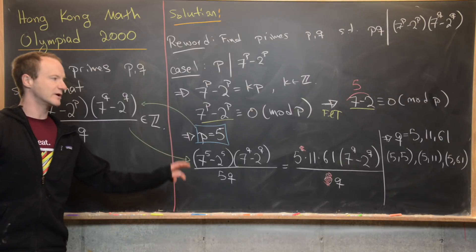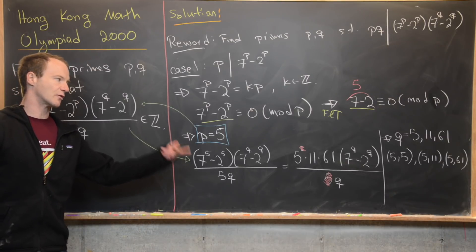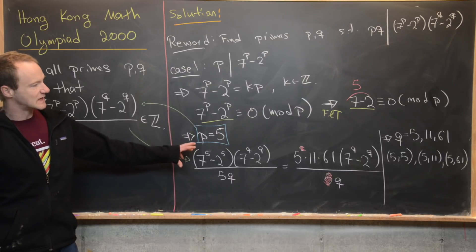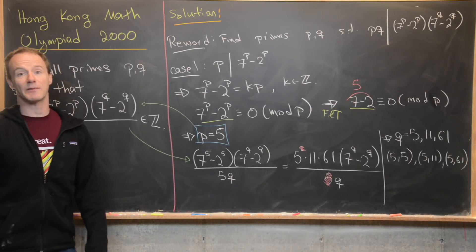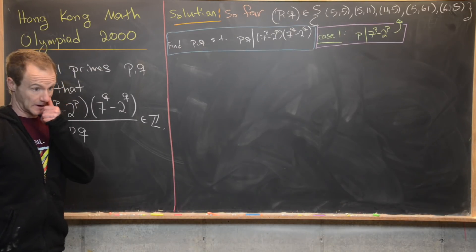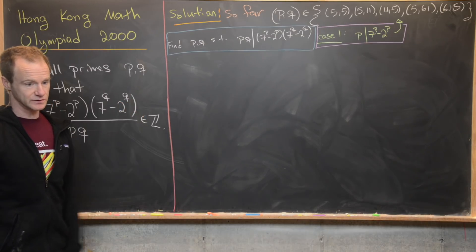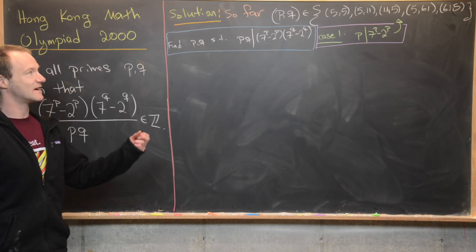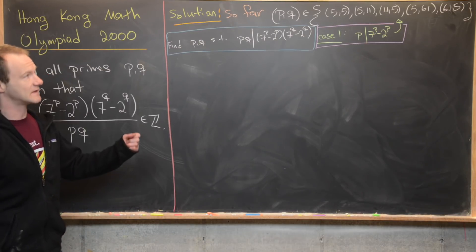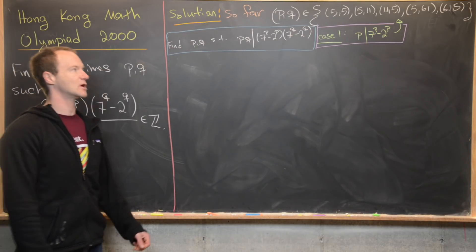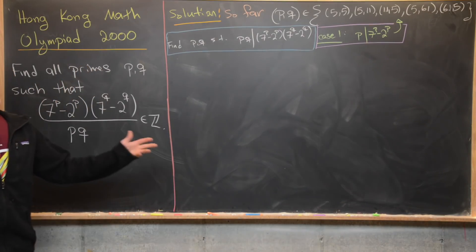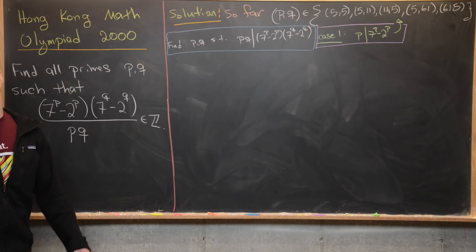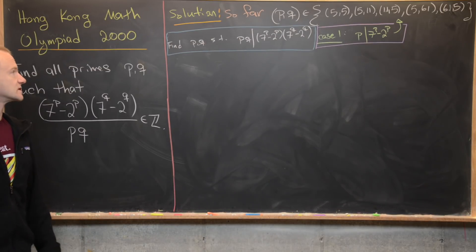By symmetry we also include the reversals of those pairs. So far our solutions are: (P, Q) ∈ {(5,5), (5,11), (11,5), (5,61), (61,5)}. These came from case one, where P divides 7^P - 2^P.